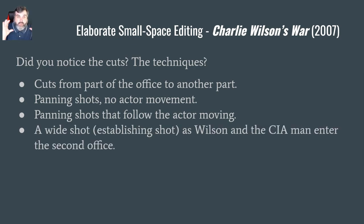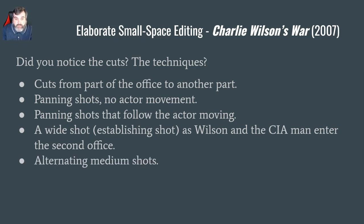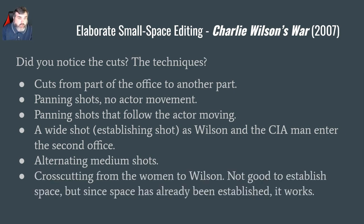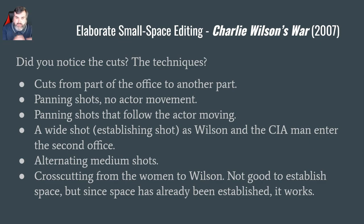There's a wide shot or an establishing shot as Wilson and the CIA man enter into the second office. There's a lot of alternating medium shots, and a lot of cross-cutting when the women are talking to Wilson at the very beginning of the clip. It's not great at establishing space, but since we already know the space is limited, it works pretty well to get that group of women in one shot and Wilson in the other — showing how one group goes against the other.